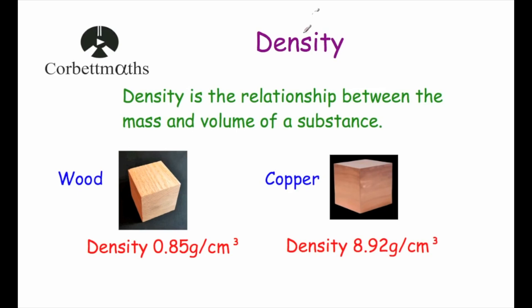Today we're going to look at density. So what is density? Well, density is a relationship between the mass and the volume of a substance. Here we've got two blocks with the same volume — a block of wood and a block of copper. The block of copper would be much heavier; it would have a higher mass than the block of wood, because copper has a higher density than wood.